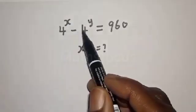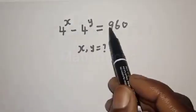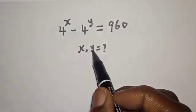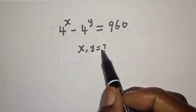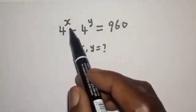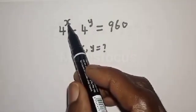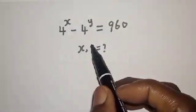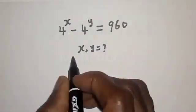4 raised to power x minus 4 raised to power y is equal to 960. What is the value of x and y? We want to find the integer values of x and y from this equation.